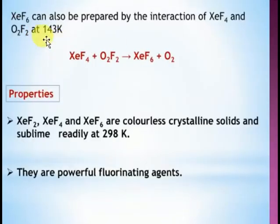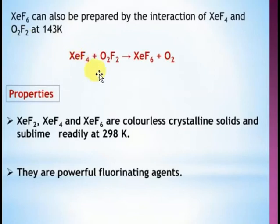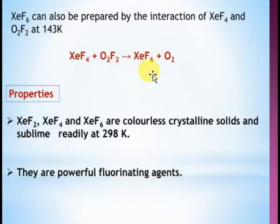Xenon hexafluoride can be prepared by the interaction of xenon tetrafluoride and dioxygen difluoride (O₂F₂) at 143 Kelvin temperature. Fluorine is the strongest oxidizing agent. Xenon tetrafluoride reacts with O₂F₂ to give xenon hexafluoride.